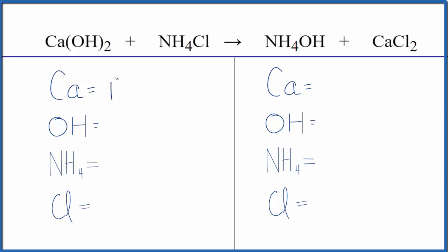So we have one calcium, but then the hydroxide, this OH, that's the hydroxide ion. It's a polyatomic ion. We have it here and in the products. So we're going to count it as just one thing. We have one hydroxide times two, so we'll have two hydroxides in the reactant.